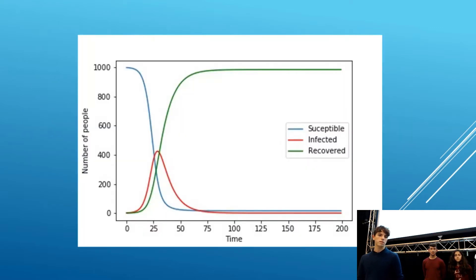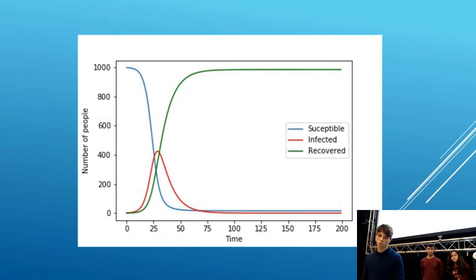On the graph behind me, you can see that the blue line represents the susceptible members of the population, the red represents the infected, and the green represents the recovered members of the population.